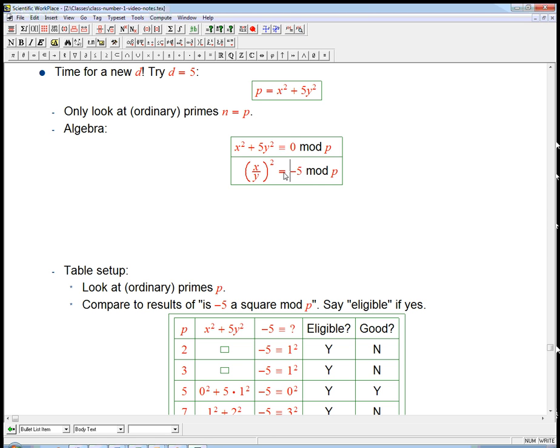that should be a congruent, sorry, congruent to a square mod p. So that's still a straightforward problem. It's the quadratic residue problem. And so let's set up the table.